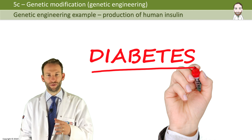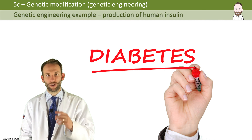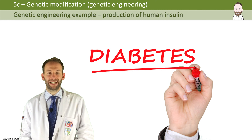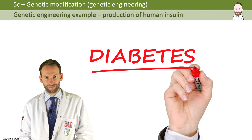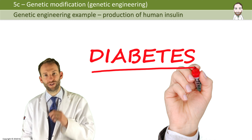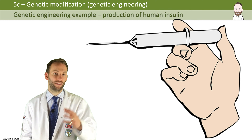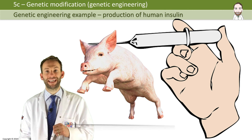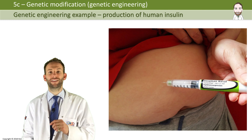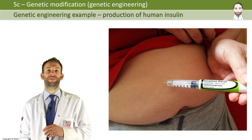One of the best examples of genetic modification that you need to know about is how bacteria have been engineered genetically to produce human insulin. If you are a type 1 diabetic, you cannot produce human insulin and you have to inject it for the rest of your life. We used to use insulin from pigs, but it doesn't work as well as human insulin. The problem is: how do you make enough human insulin for millions of diabetics?